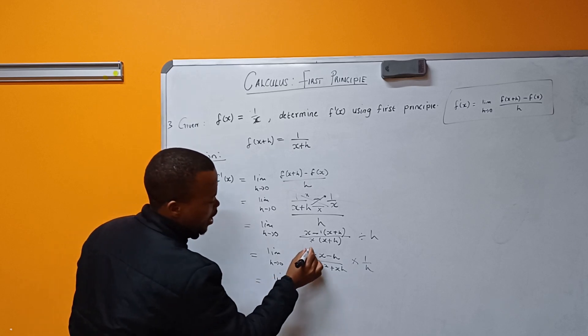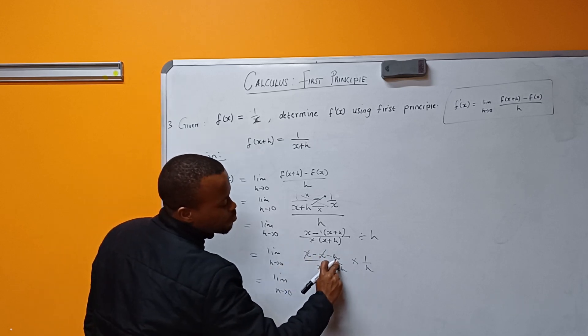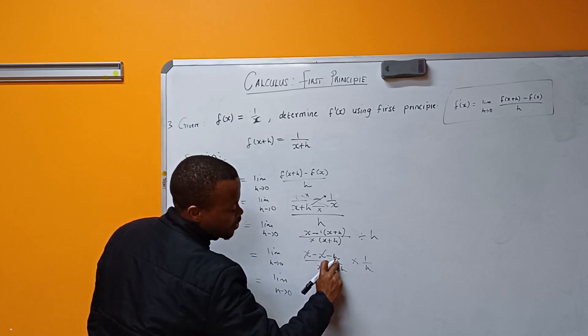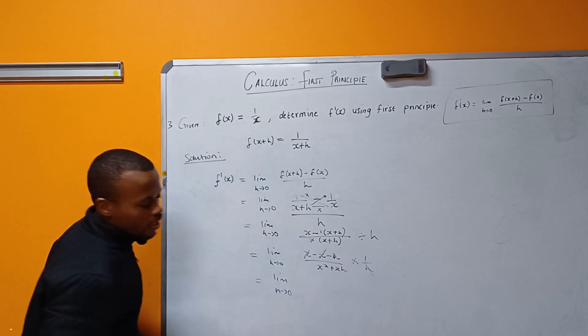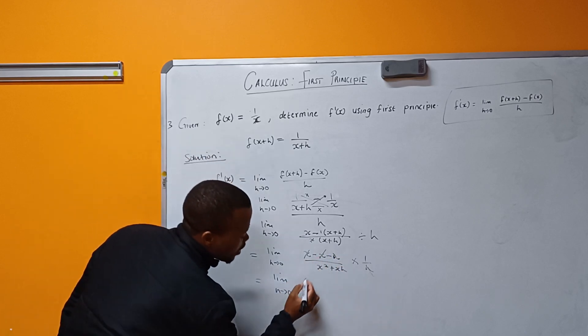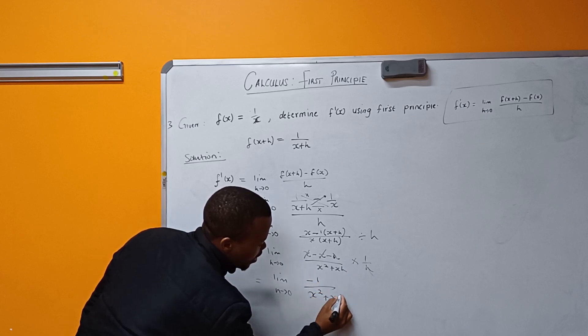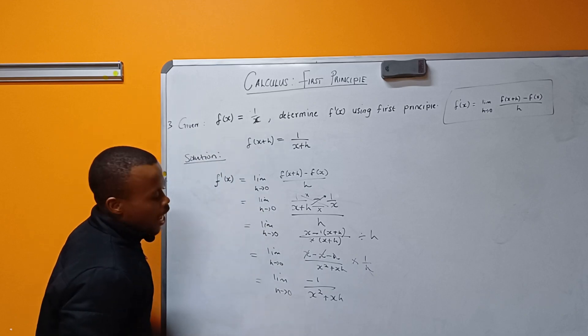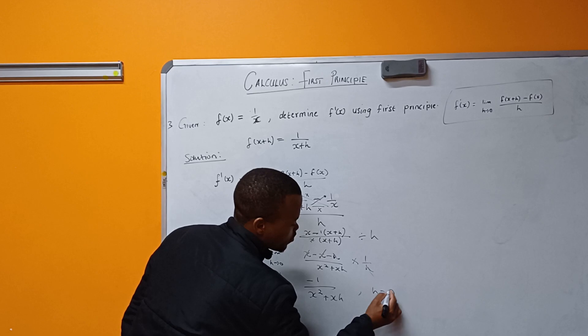x and x cancel one another. I'm left with -h. In fact, -h and this h will cancel one another, and I will be left with -1/(x² + xh).